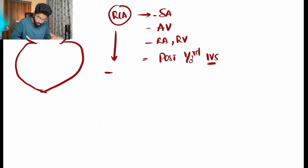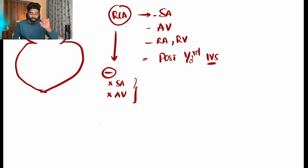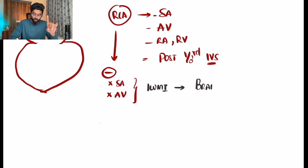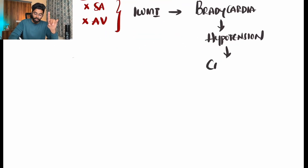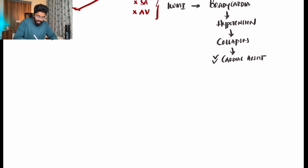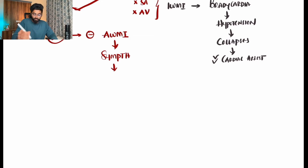An interesting point: when there is a block in the RCA, the SA node and AV node are inhibited. This is why inferior wall MI patients present with bradycardia — the SA and AV nodes are not functioning due to lack of blood supply. This leads to hypotension and collapse. In contrast, when the LAD is blocked causing anterior wall MI, the sympathetic nervous system is activated, increasing heart rate and BP as a compensatory mechanism.